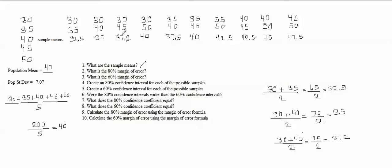Question number two says: what's the 80% margin of error? What we have to do is find out what the middle eight samples are out of the ten samples, because eight out of ten is 80%. When you see the question about the 80% margin of error, you have to find out where the middle eight are located. If you leave off the lowest one and the highest one, everything in between will be the middle eight — that's samples one through eight.